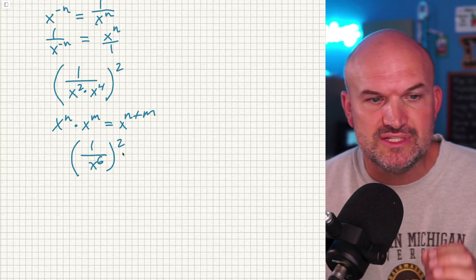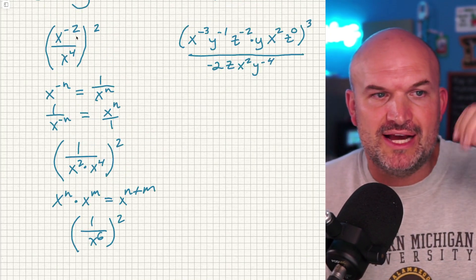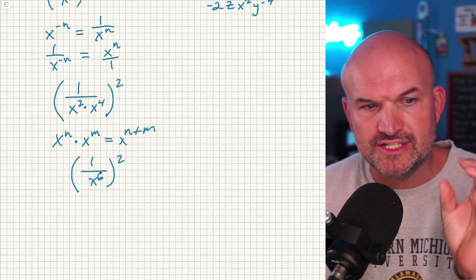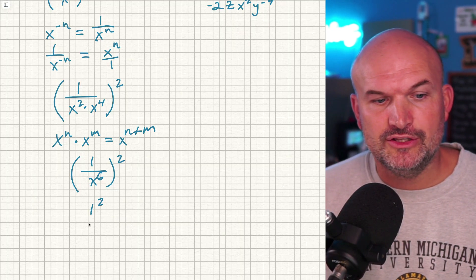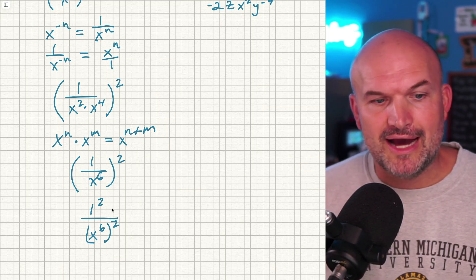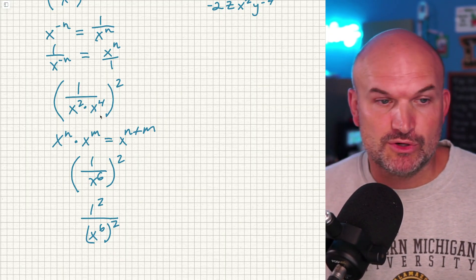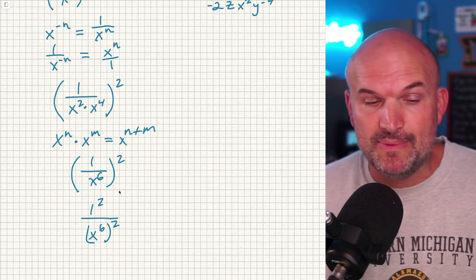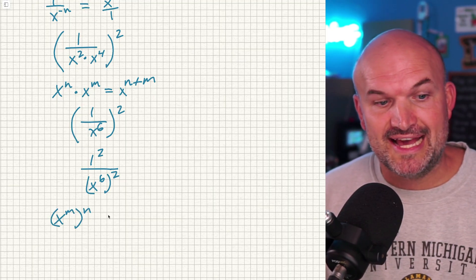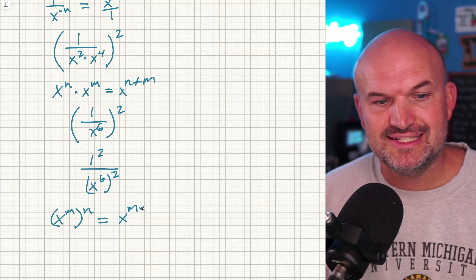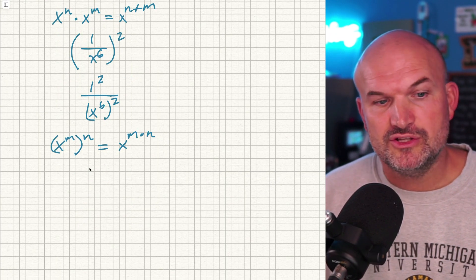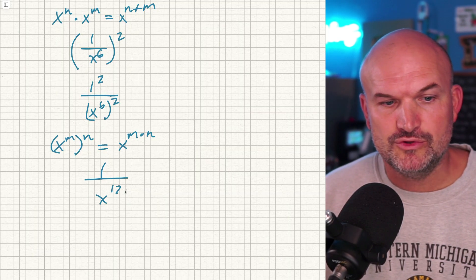So now I have one over x to the sixth raised to the second power. We're going to use the power to quotient rule — since I have a one in the numerator, the power to quotient rule says you can apply that power to the numerator as well as the denominator. So x to the sixth is going to be squared. When you take a power raised to another power, you multiply them: x to the m raised to the n is x to the m times n. So six times two is 12, and one squared is just one. The final answer is one over x to the 12th power.